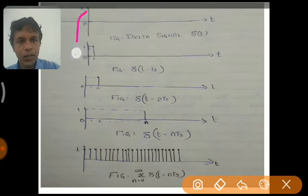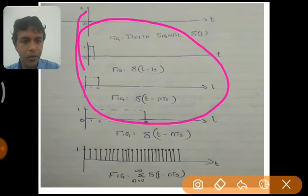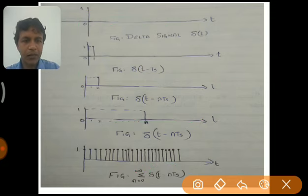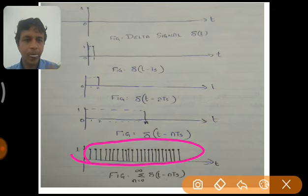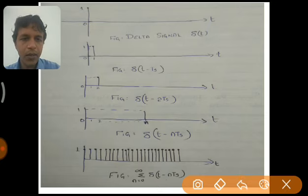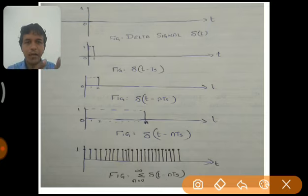When we add all these time-shifted delta signals we get the summation from n equal to zero to infinity of delta of t minus nTs. Adding all these time-shifted delta signals gives us the comb signal. It represents the structure of a comb — the comb you use to comb your hair. The amplitude is one, and the pulses are occurring at regular intervals of time with a constant gap between two pulses.